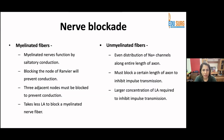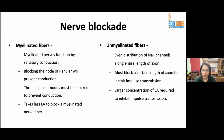In myelinated fibers, conduction occurs via saltatory conduction, jumping from one node to another. Blocking the node of Ranvier will prevent conduction; three adjacent nodes must be blocked for a successful block. It takes less local anesthetic to block a myelinated nerve fiber. In unmyelinated fibers, sodium channels are evenly distributed along the entire axon length, so a certain length of axon must be blocked to inhibit transmission — requiring a larger concentration of local anesthetic.